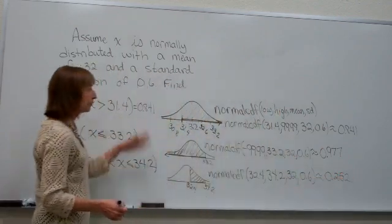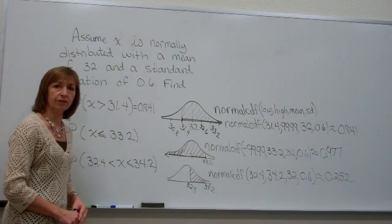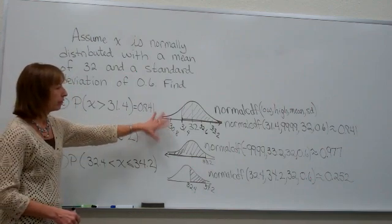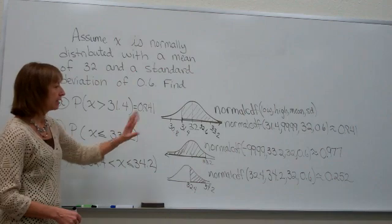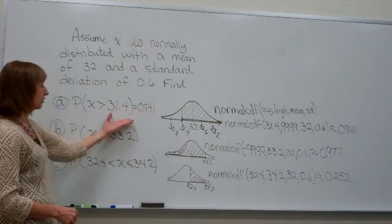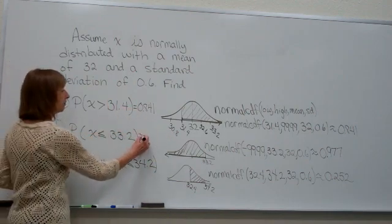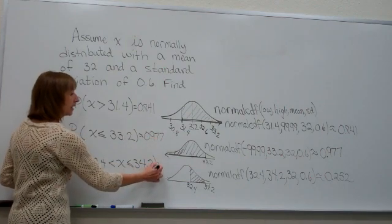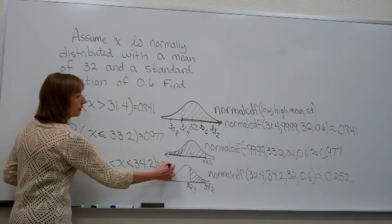And that's a way that you can use your graphing calculator to find the areas under the normal curve for a particular distribution. And those areas correspond to the same value that we get for the answers to our probability, our corresponding probability questions.